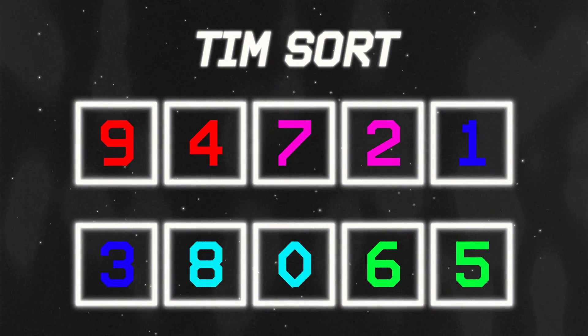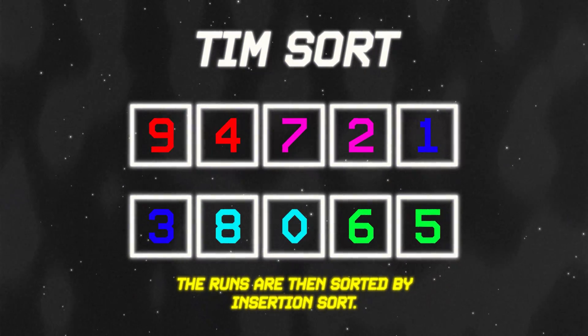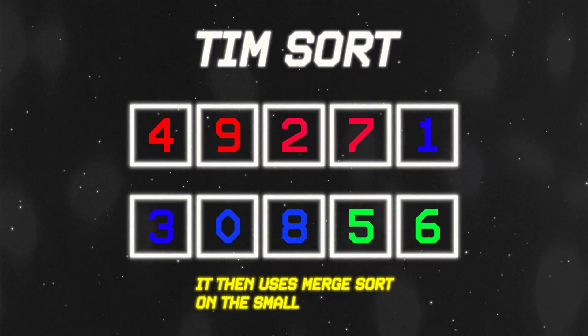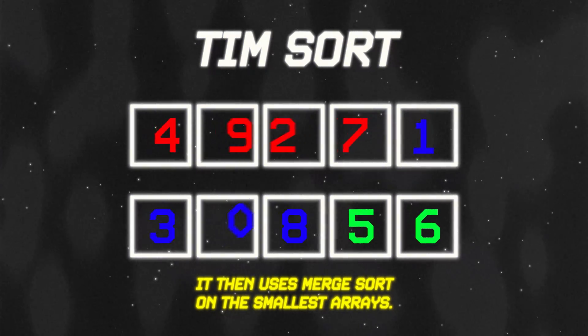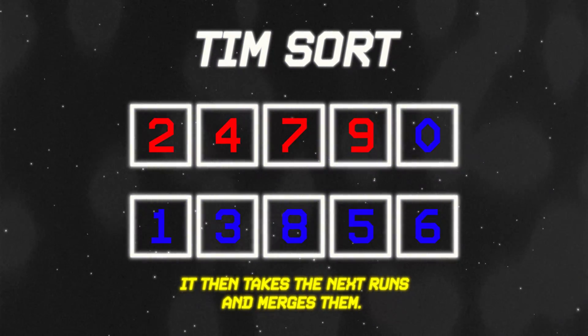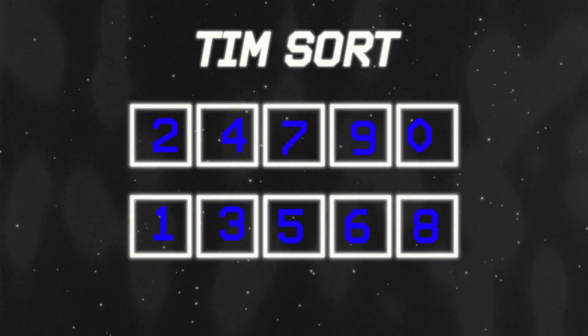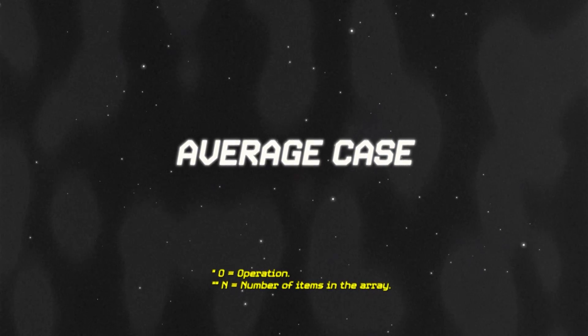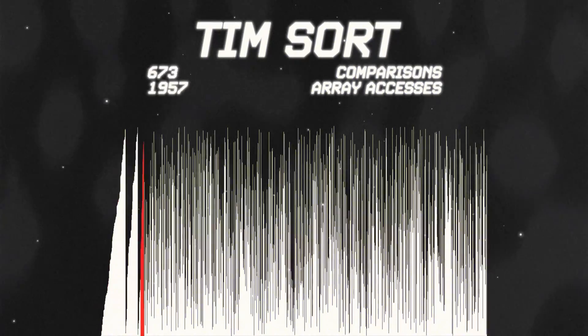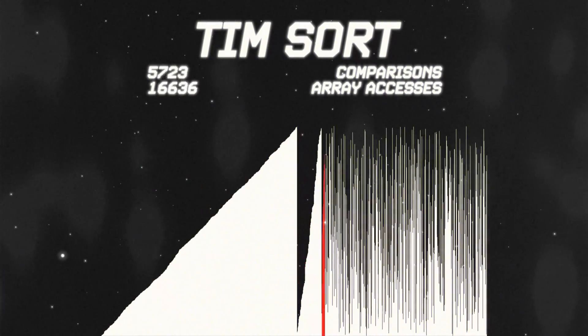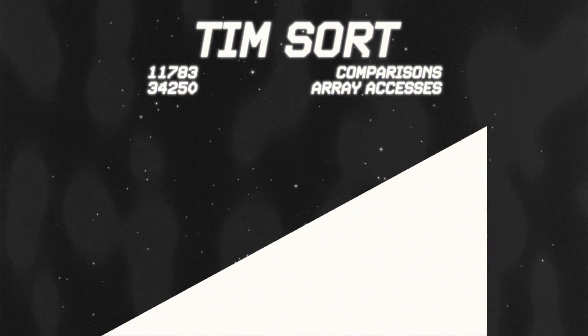Timsort was made in 2002 and is still used in Python — well, except for Python 3.11 and beyond. Timsort separates an array into small subarrays called runs, which are then sorted using insertion sort. Once all runs are sorted, it uses merge sort on the two smallest arrays. After those are merged, it takes the next run and merges it in. Rinse and repeat until everything is sorted. Timsort has an average performance of O(N log N) and works fast because it gives insertion sort and merge sort a partially sorted or small array to work with. Fun fact: the inventor named it after himself — Tim Peters. That's the biggest flex of all time.